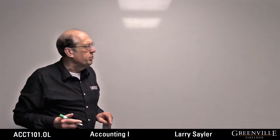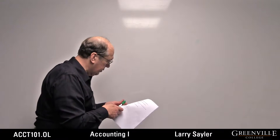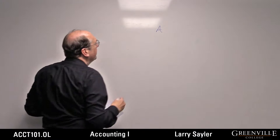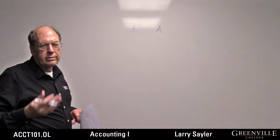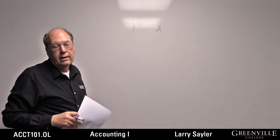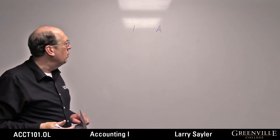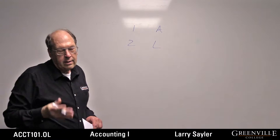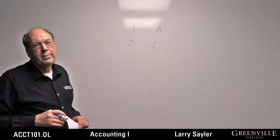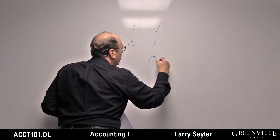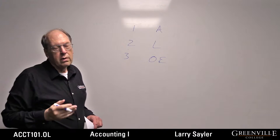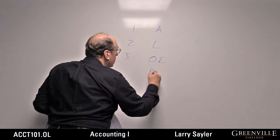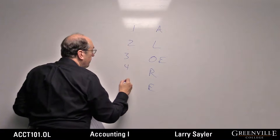We often have five types of accounts. Asset accounts often start with a 1 in an account structure — so cash might be 1-0, accounts receivable might be 1-1, inventory might be 1-2. Liabilities start with 2: accounts payable, wages payable, notes payable. Owner's equity starts with 3 — capital and drawing are the two primary ones. Then revenue and expenses are 4 and 5.